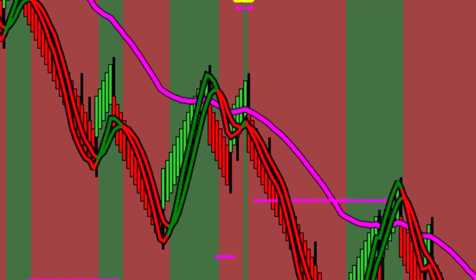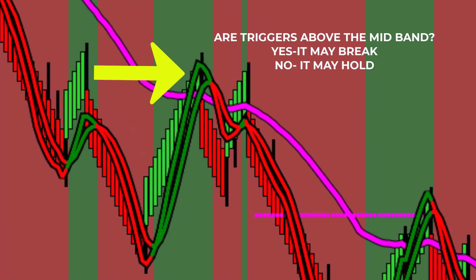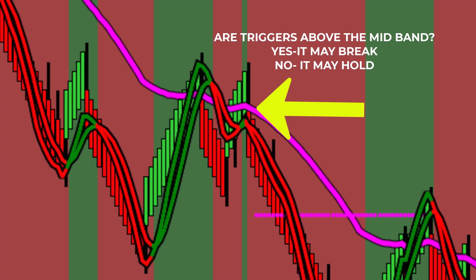When reading any next-gen indicators such as the mid-band, the location of the trigger lines will tell you if it may hold or break. Triggers above the magenta-colored mid-band suggest it may break. When triggers cross down and turn red, you will anticipate the mid-band area of resistance will continue the downtrend.